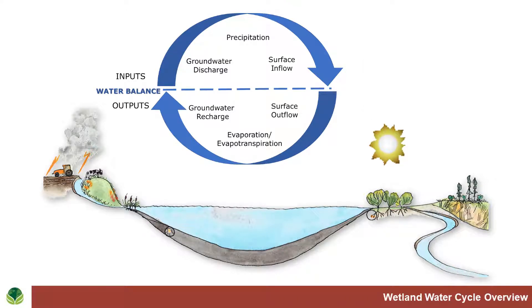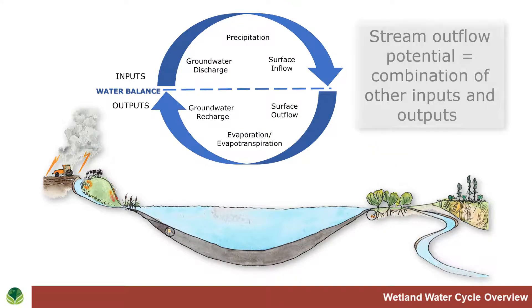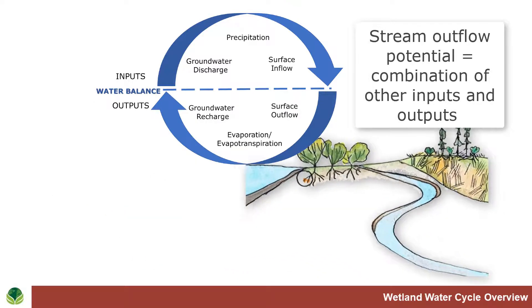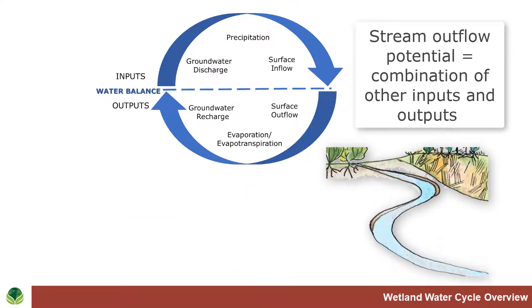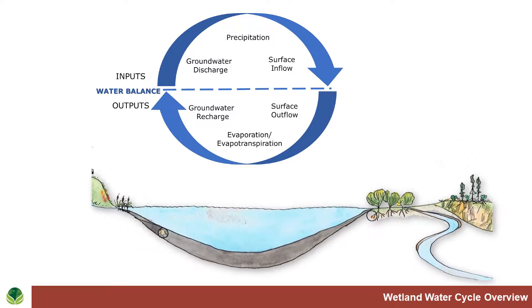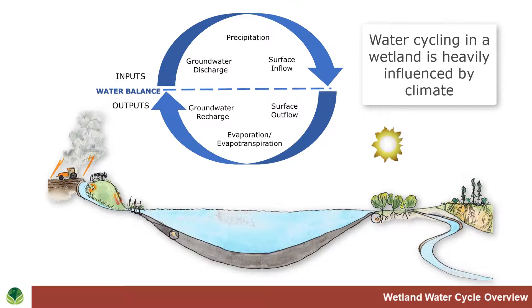So all of this — if there's a stream coming out of the wetland — will determine whether water flows into the stream and when it flows into the stream. Evaporation and precipitation are very much controlled by climate.